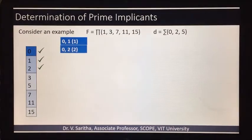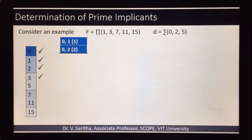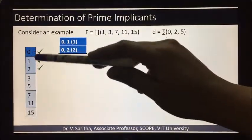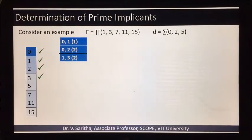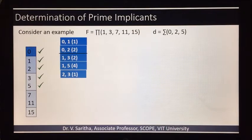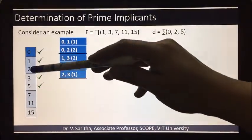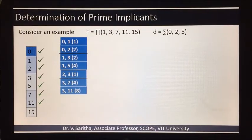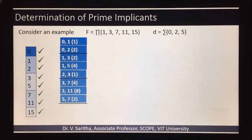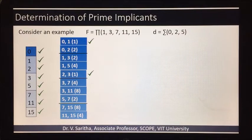So: 0,1 — 0,2 — and here, because the comparison is completed between these two groups, a separation is given — then 1,3 — 1,5 — 2,3 — then separation is given because the comparison of these two groups is done — then 3,7 — 3,11 — 5,7 — separation is done — then 7,15 — 11,15. So we can compare; the process is the same as explained in the previous videos.